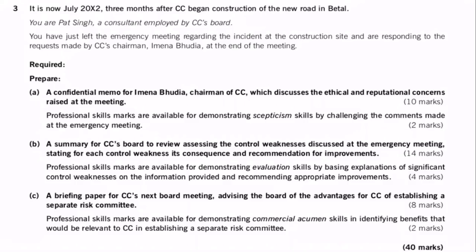Let's have a look at question three in more detail. This was the longest question on the examination, giving 40 marks, and I'm going to break each question into A, B and C. The first one asked us to discuss ethical and reputational concerns raised at the meeting for 10 marks. The second was a summary reviewing control weaknesses and for each weakness talking about consequence and recommendation for improvement, giving 14 marks. And the final one was a briefing paper talking about the advantages of establishing a separate risk committee for eight marks.